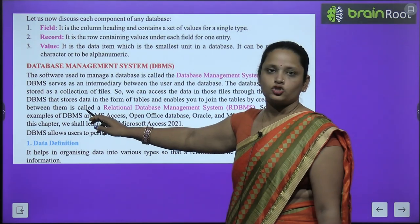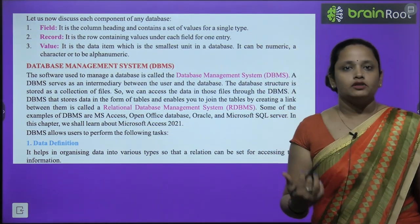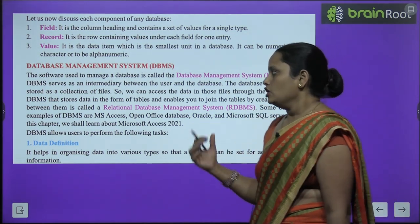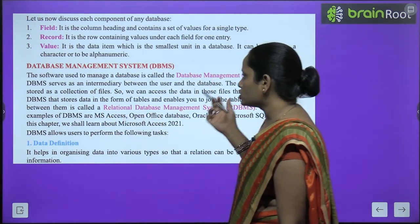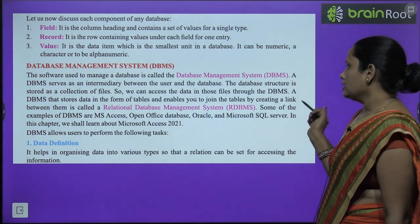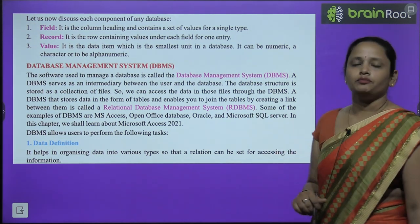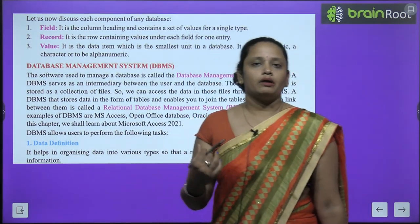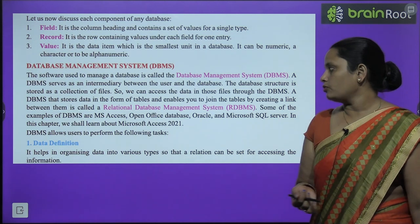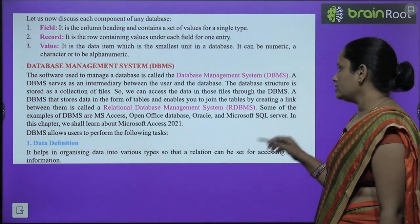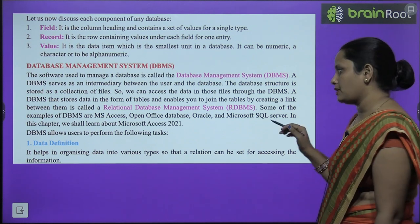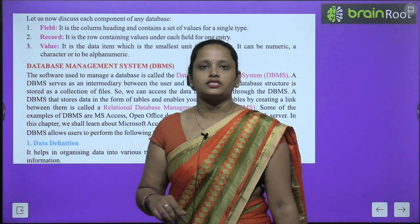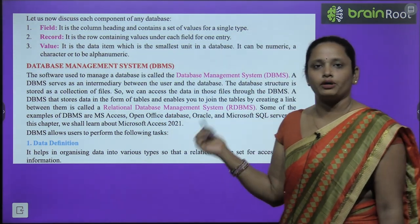A DBMS that stores data in the form of tables and enables you to join tables by creating a link between them is called a relational database management system — RDBMS. Some examples of DBMS are MS Access, Open Office Database, Oracle, and Microsoft SQL Server. In this chapter we shall learn about Microsoft Access 2021.